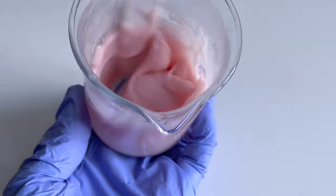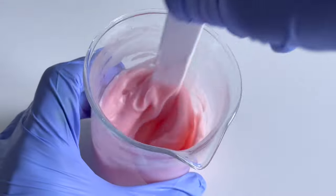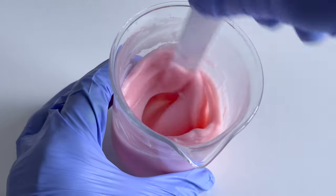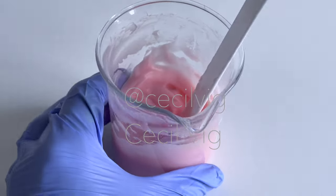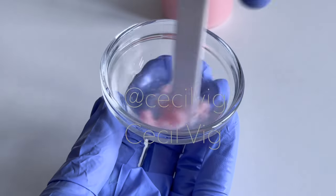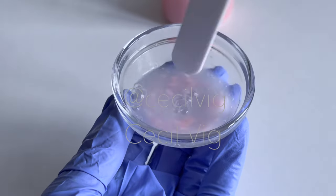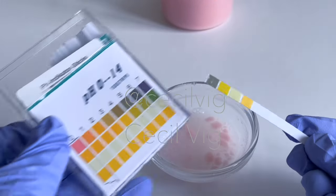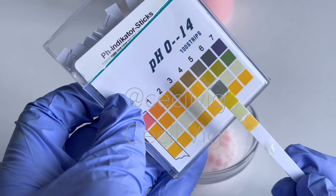As you mix in the citric acid, you will notice the color of the hair conditioner change from a dull pink to a bright pink. Guys, what a beautiful color! I love it. After mixing in the citric acid, I test the pH value again. If you wish to obtain an accurate pH result, please make sure you use a digital pH meter. As you can see, we now have a pH value of 5, which is perfect.